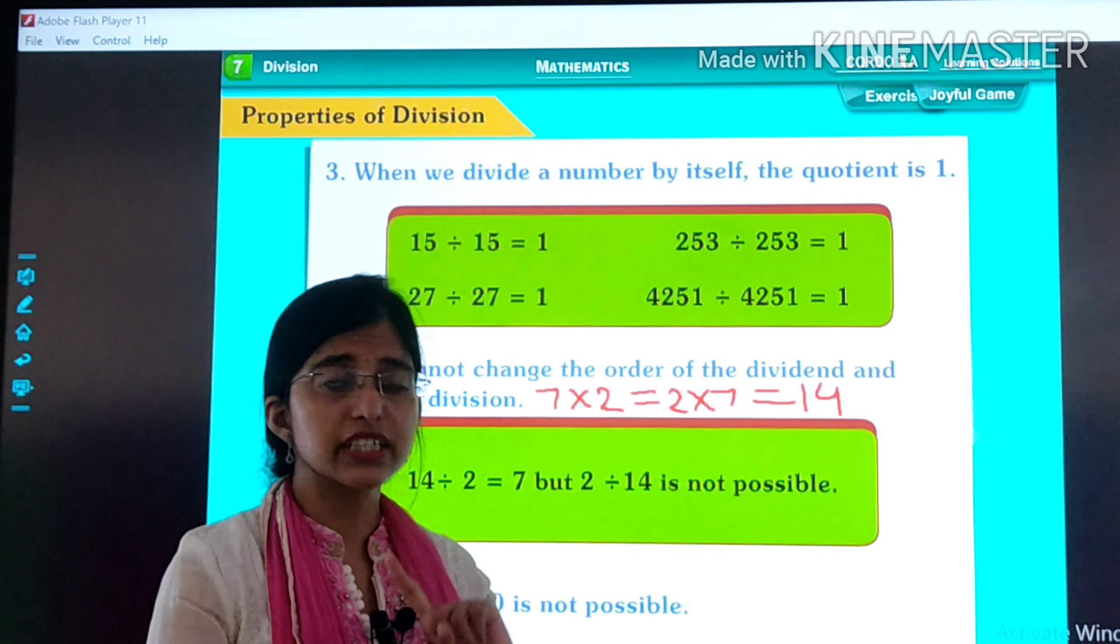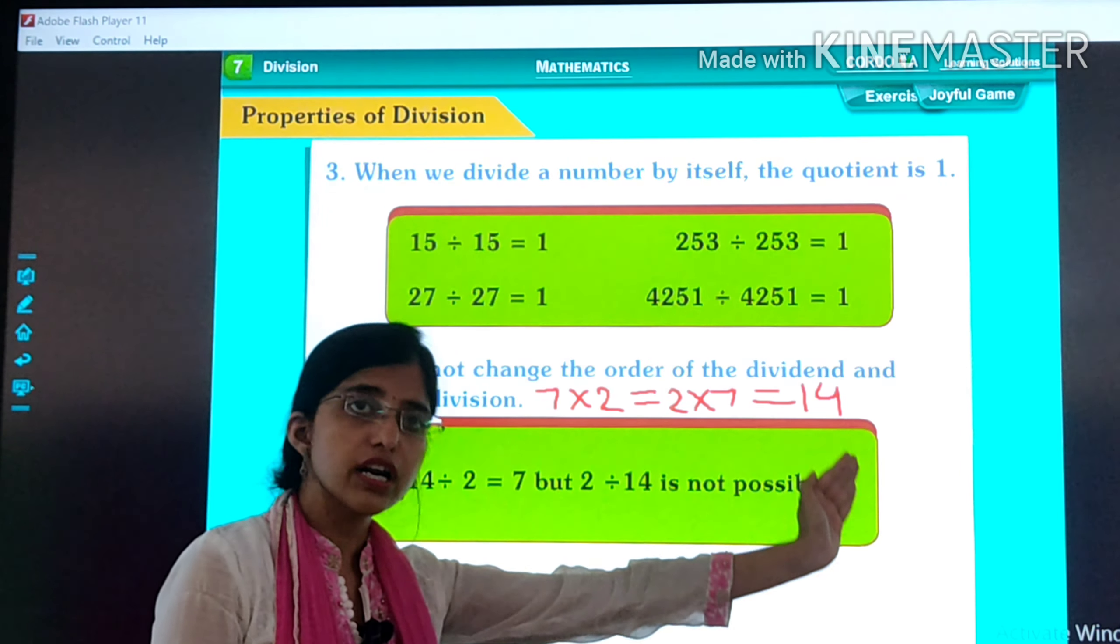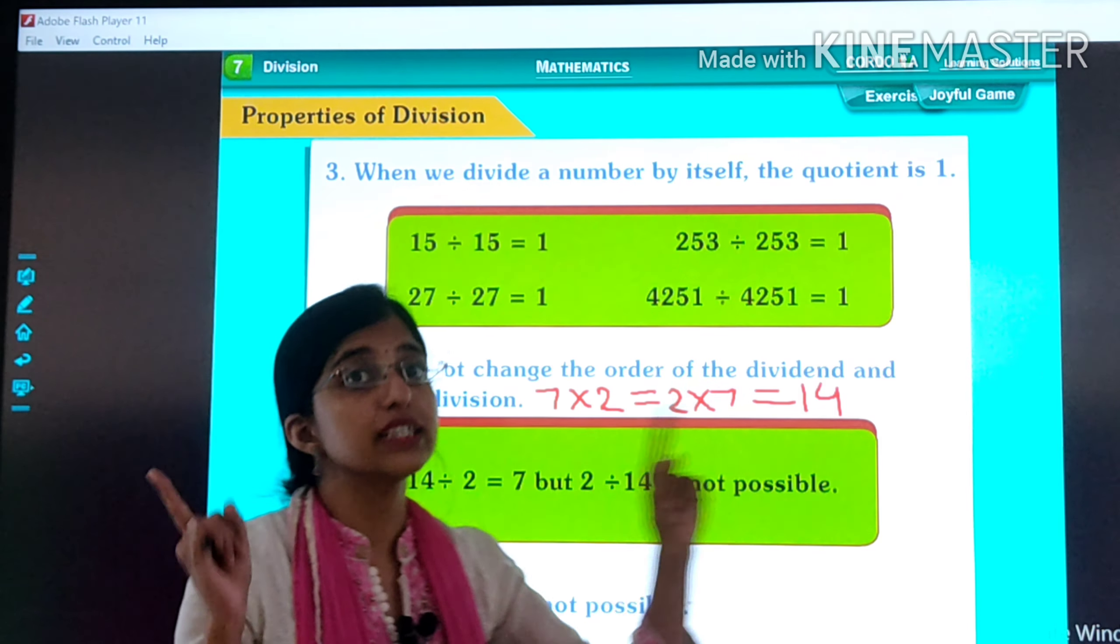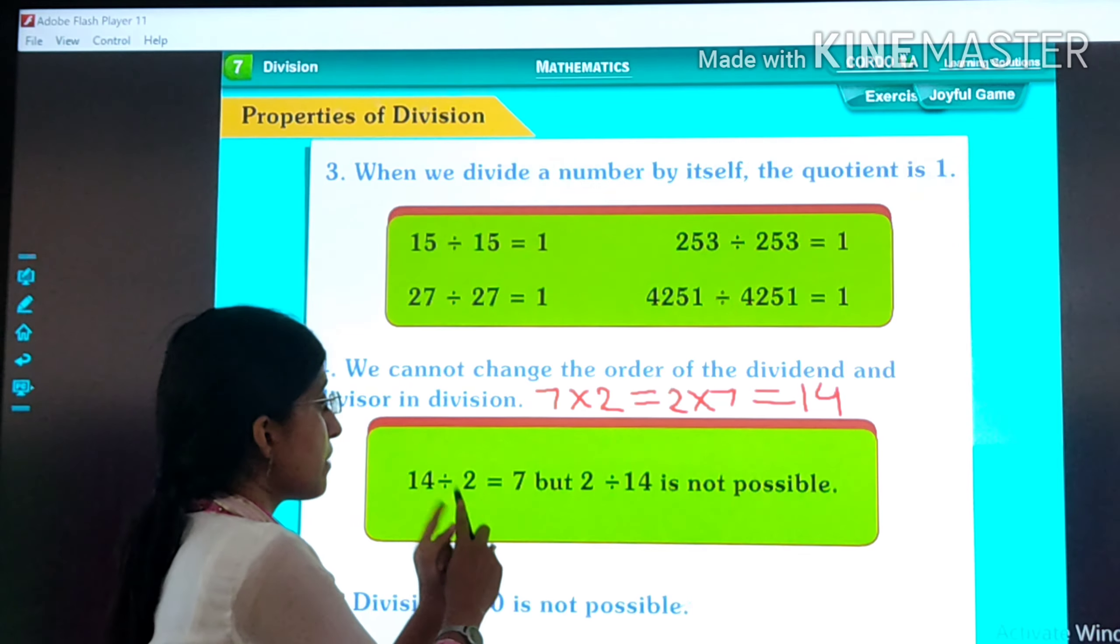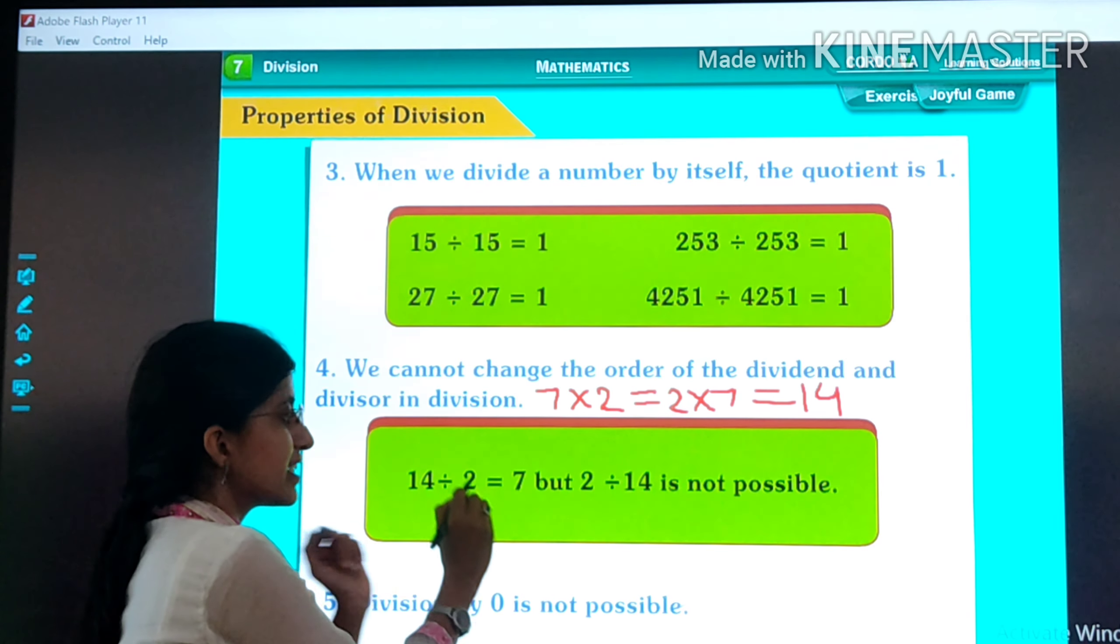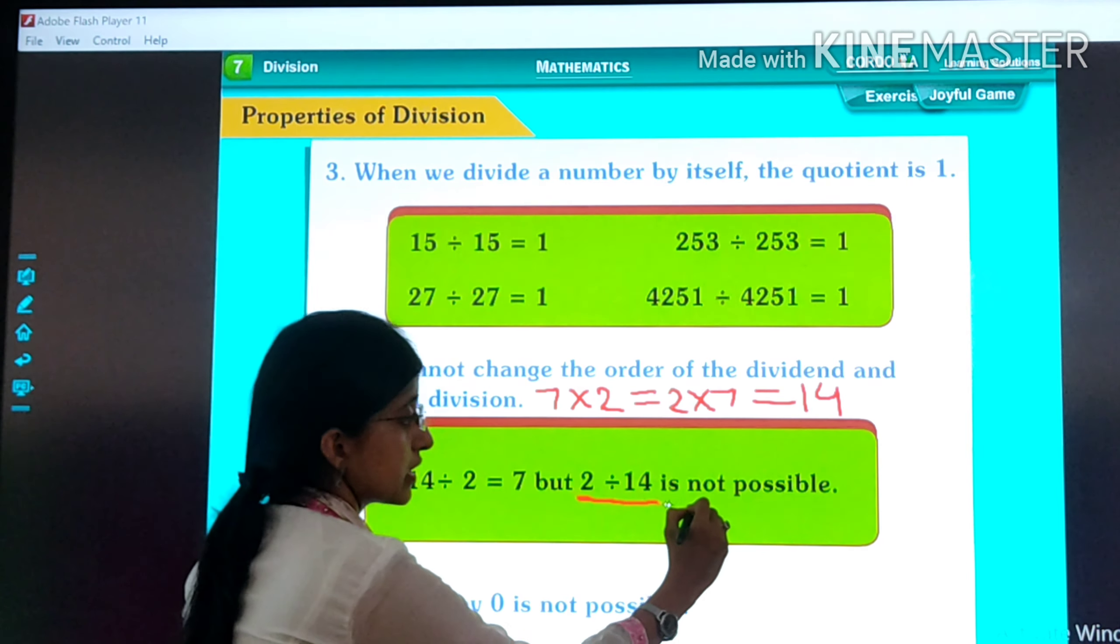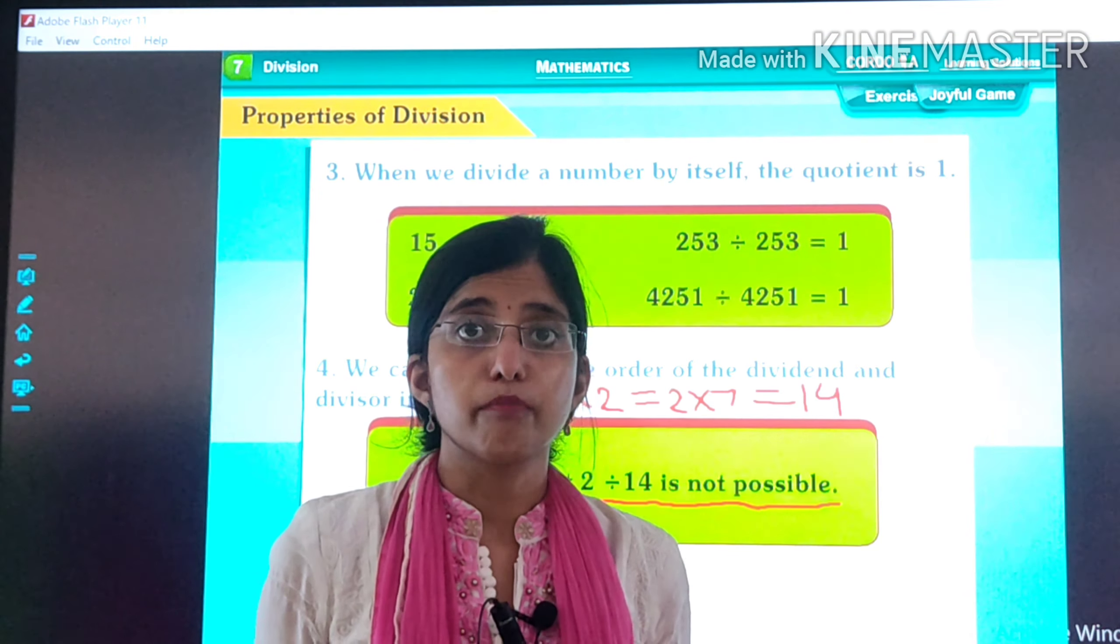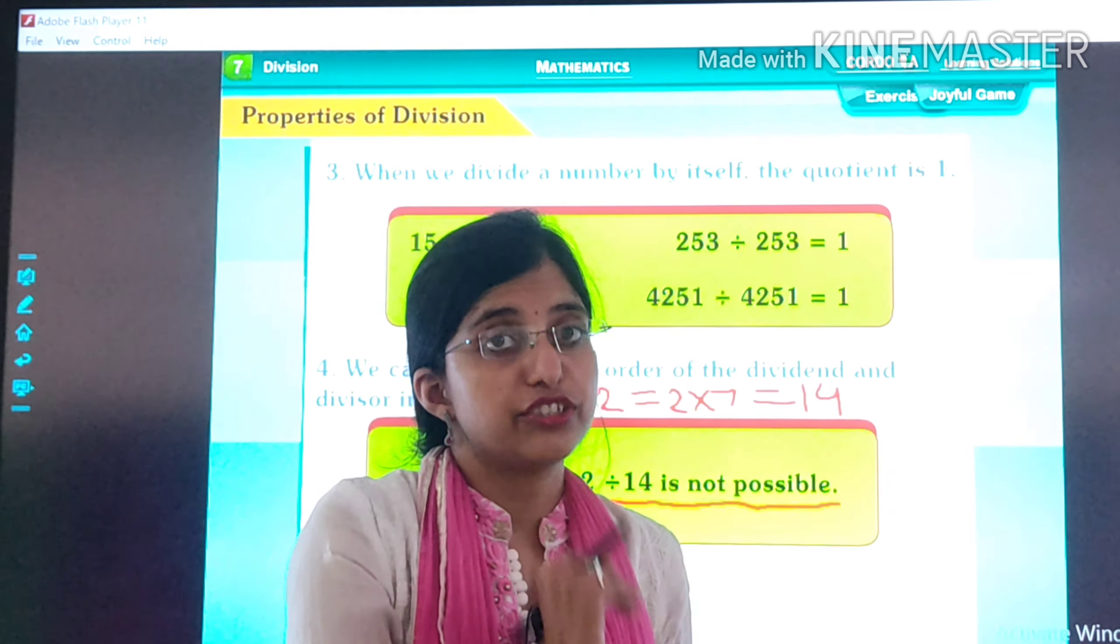We can change the order, but we always get the same answer. 7 times 2 is 14 and 2 times 7 is also 14. But this is not the case in division. 14 divided by 2 is 7. If we divide 14 by 2, we will get 7. But 2 divided by 14 is not possible, because 2 does not come in the table of 14. That's why.